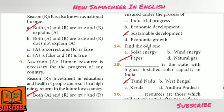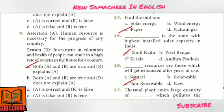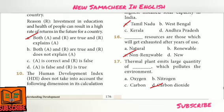Question 14: Find the odd one out — Answer Option C: Paper. Question 15: Dash is the state with highest installed solar capacity in India — Answer Option A: Tamil Nadu.